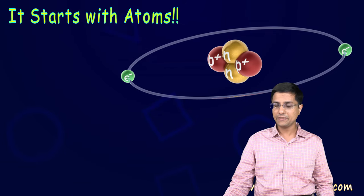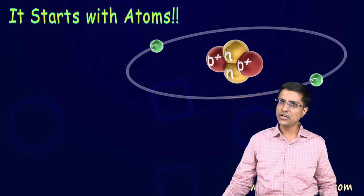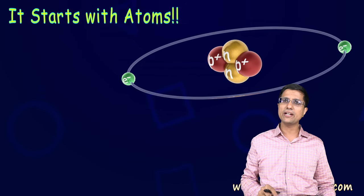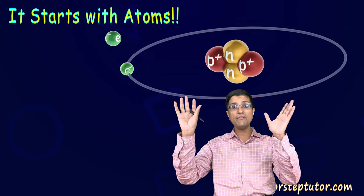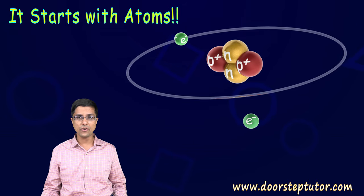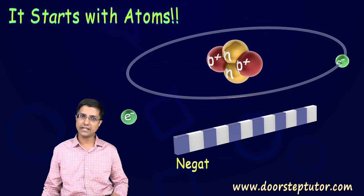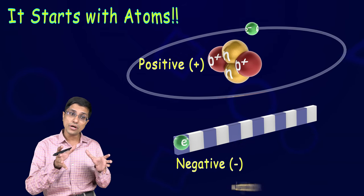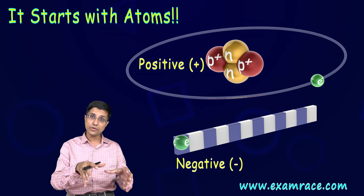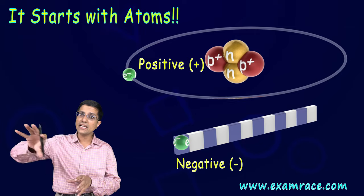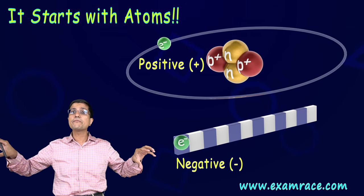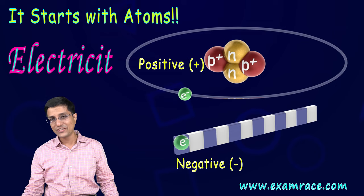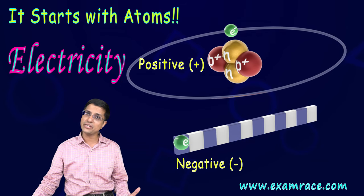Sometimes, however, we can excite these electrons. If there is a nucleus and an electron going around it, we can provide extra energy to this electron and it would just fly away. This separates the electron — its negative charge — from the proton. Now we have a nucleus which is positively charged and an electron which is negatively charged. With this separation of charges, we can produce electricity.